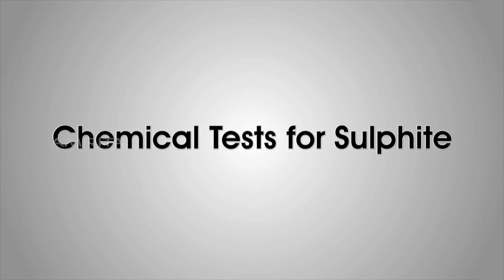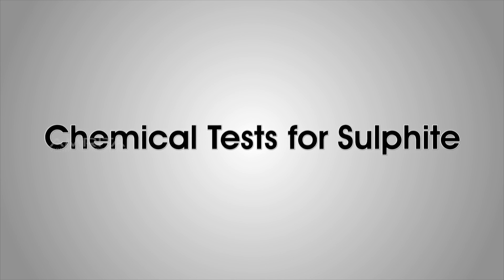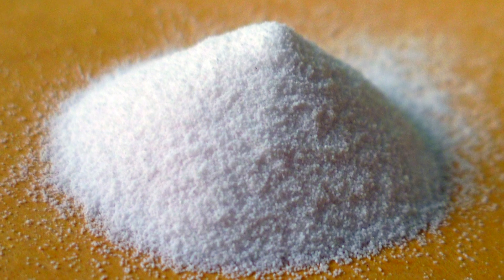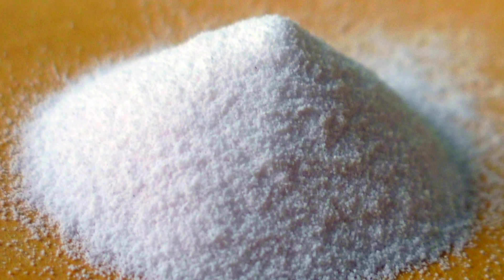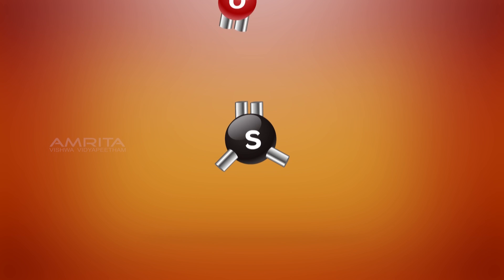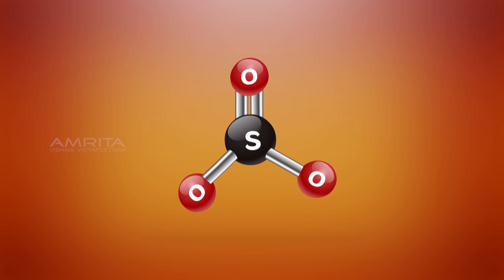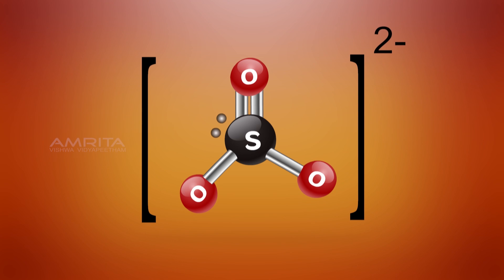Chemical Tests for Sulphite. Sulphites are compounds containing sulphite ions. In the sulphite ion, the sulphur atom is doubly bonded to one oxygen atom and singly bonded to the other two oxygen atoms. There is also a non-bonded lone pair of electrons on the sulphur.